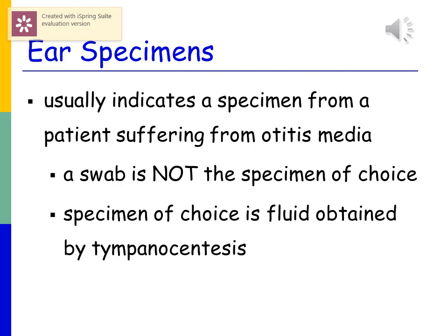For an ear specimen, this is usually from someone who has otitis media. Swabs are not the specimen of choice. The best specimen is fluid obtained through a tympanocentesis, where fluid is drawn into a sterile container from deep in the middle ear region. A swab stuck into the ear canal will only yield skin flora and usually won't capture the organism causing the infection.